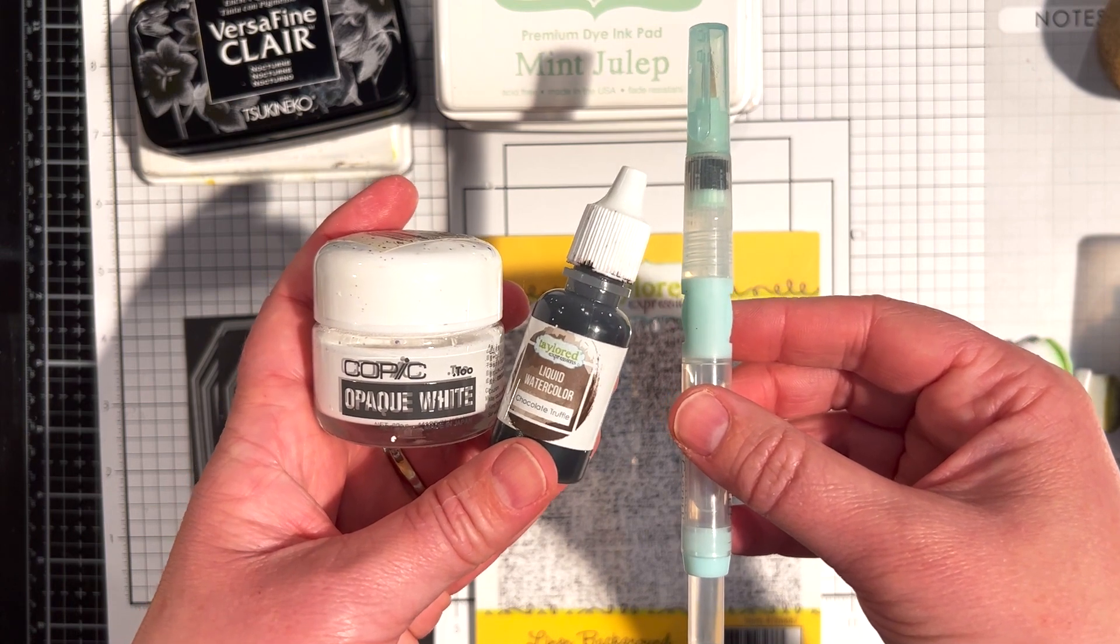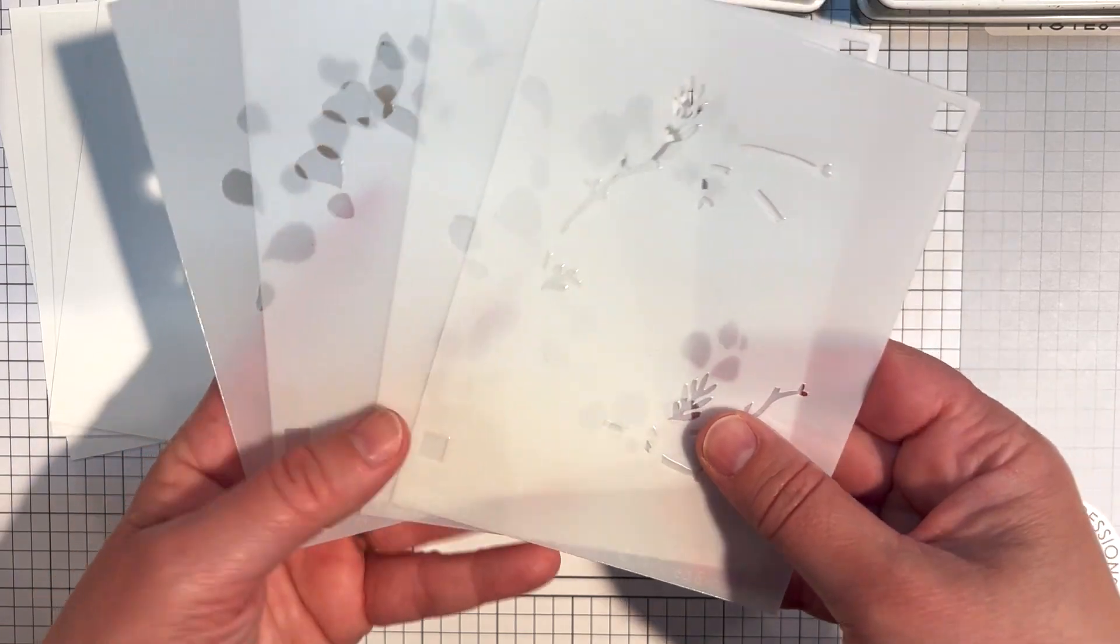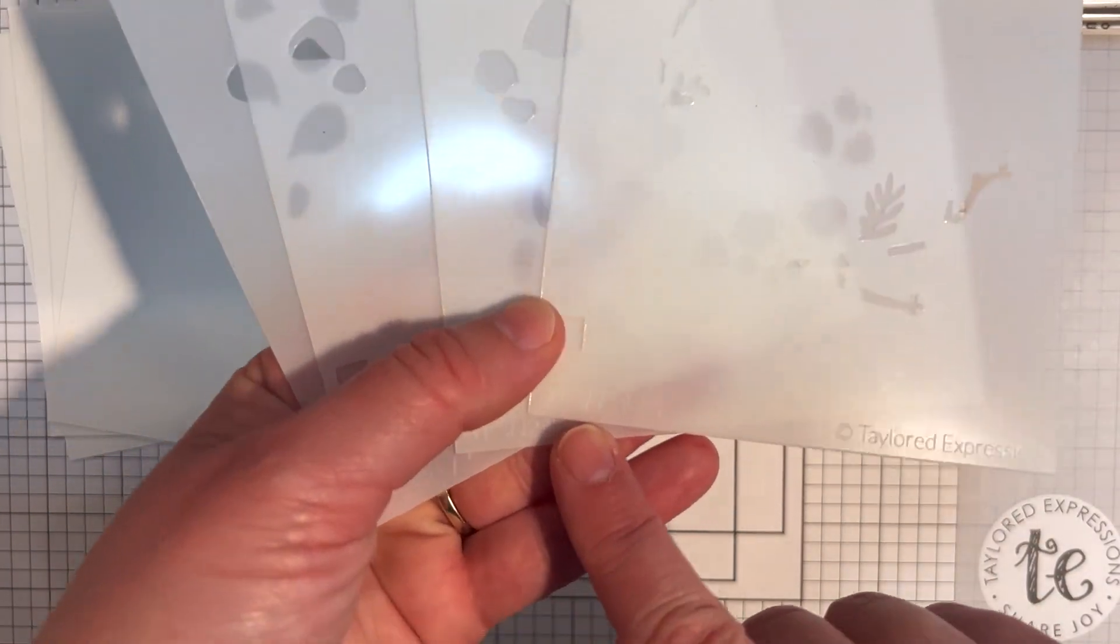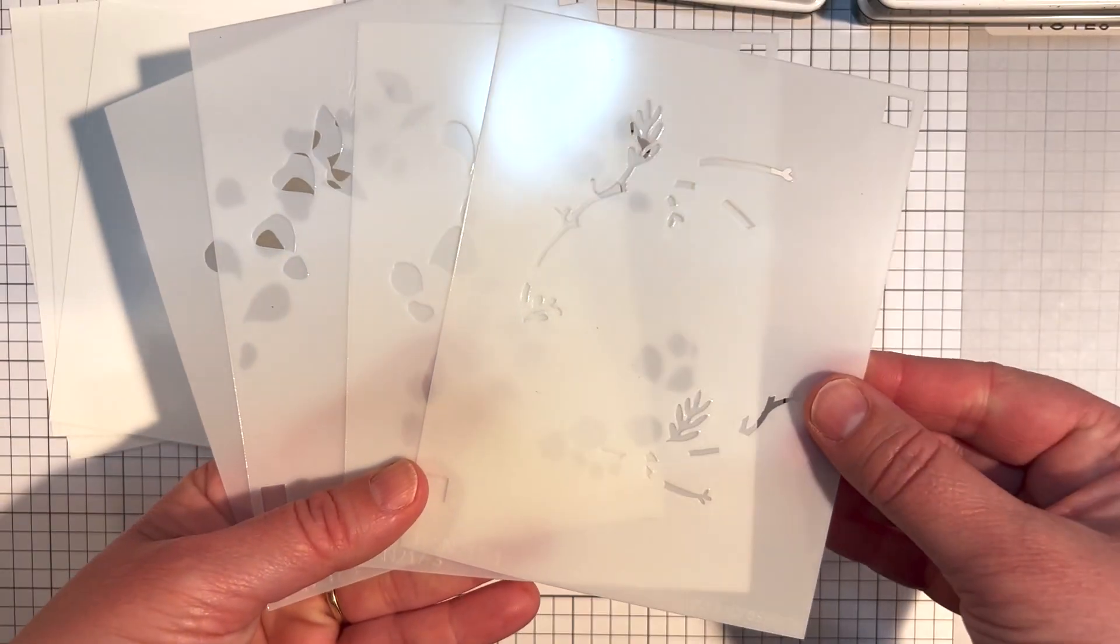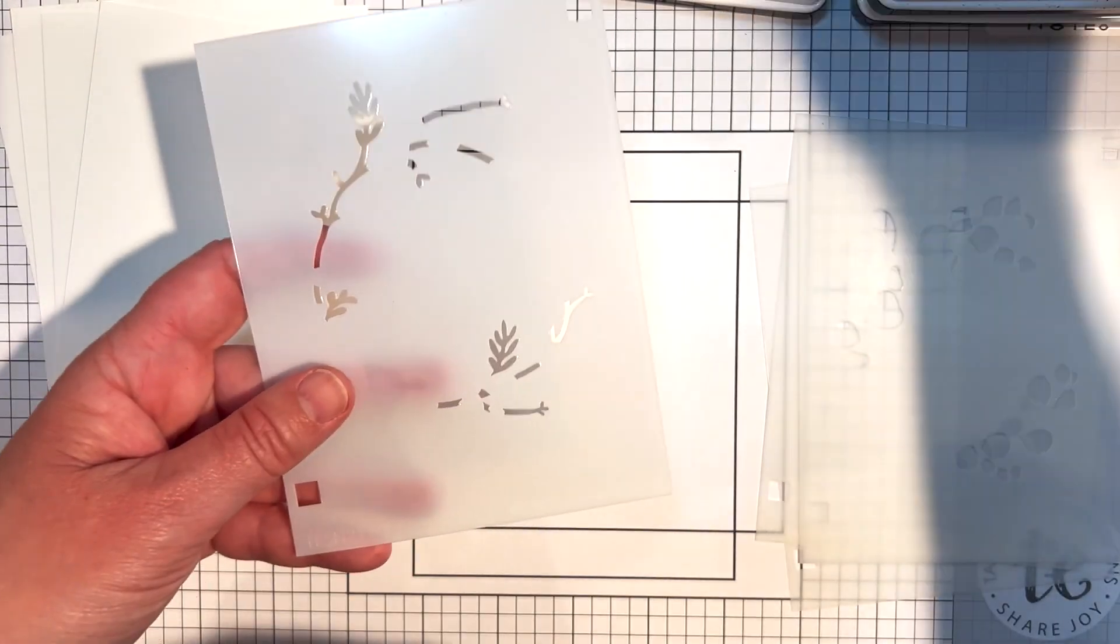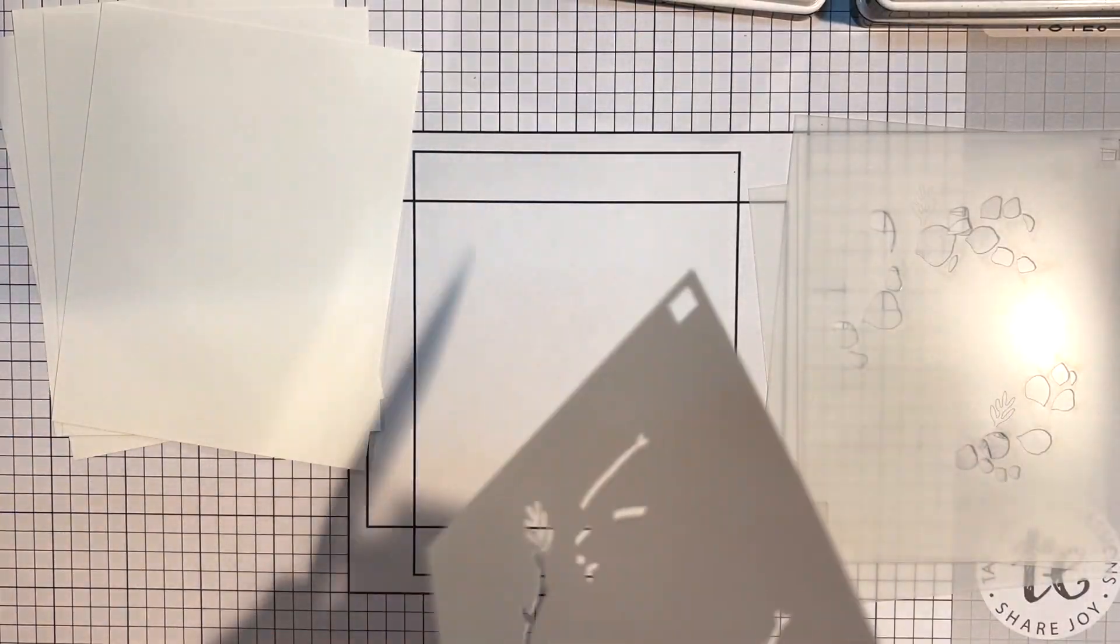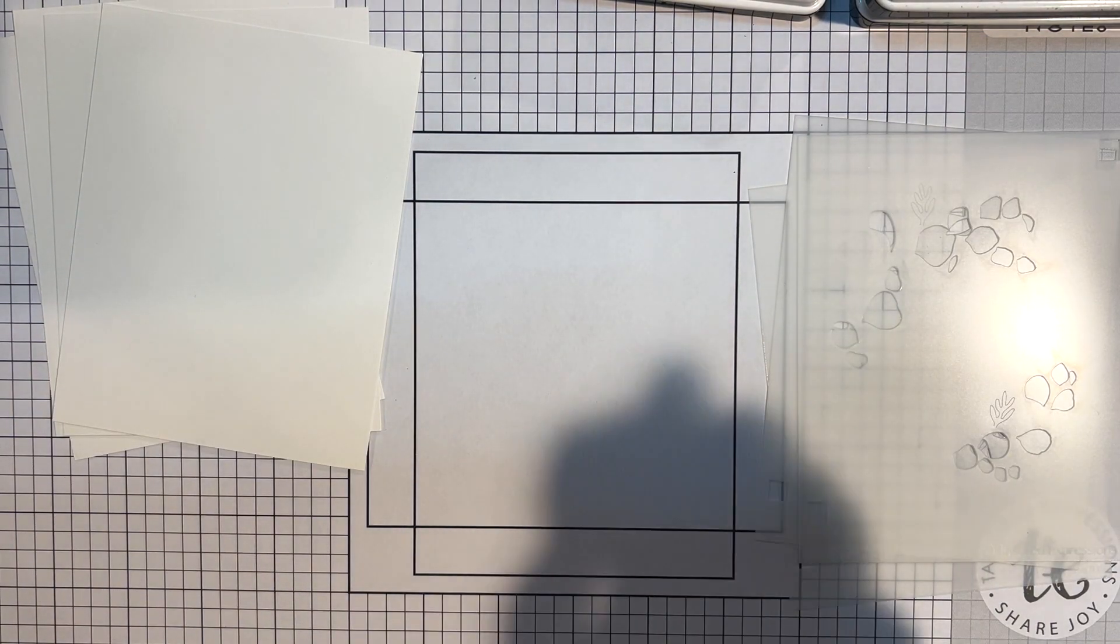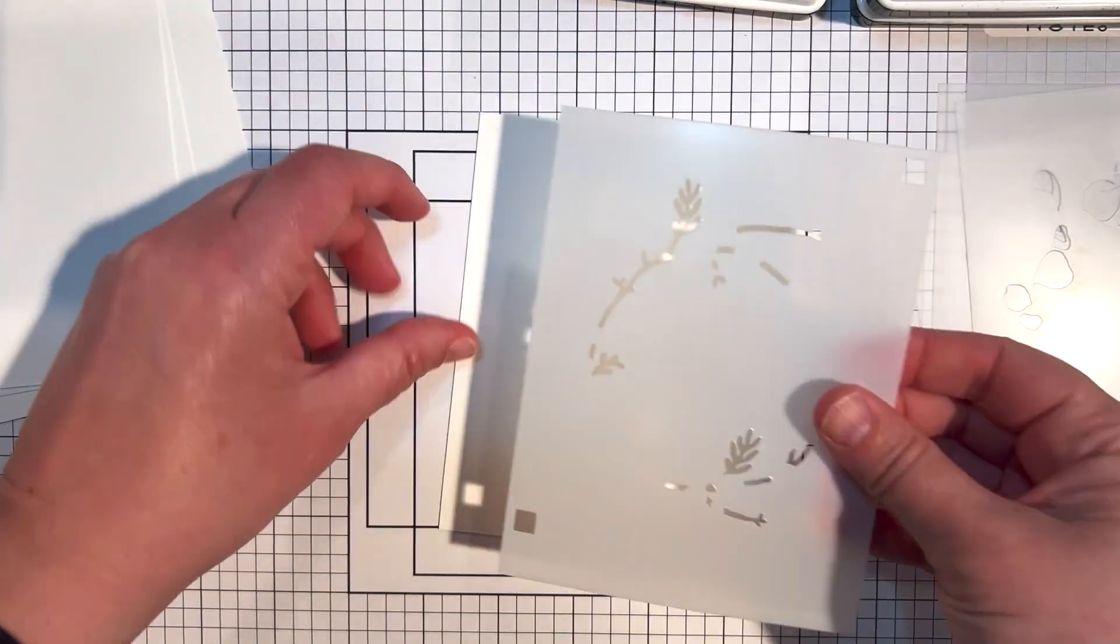I'm starting off with the modern eucalyptus layered stencil set. This is a set of four stencils and you'll notice there is a product number followed by 1, 2, 3, and 4. This is a suggested order of stenciling your designs to get the best results. You're going to notice that I don't do it in the right order, and I think as long as you start with the first one, the other ones aren't as critical.